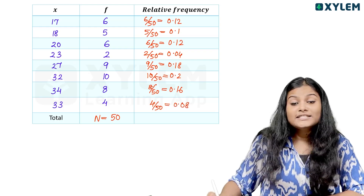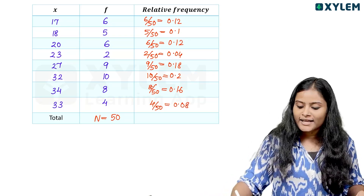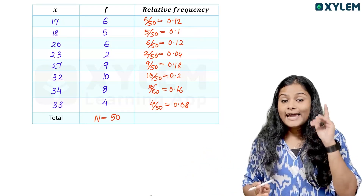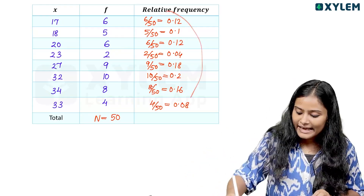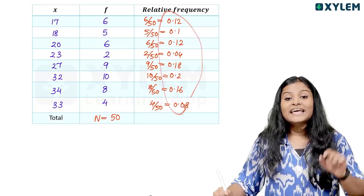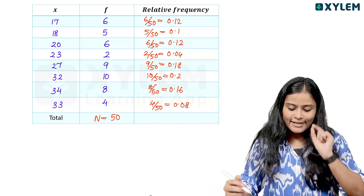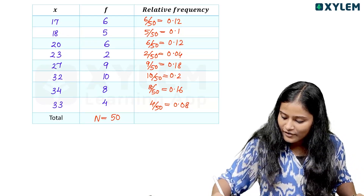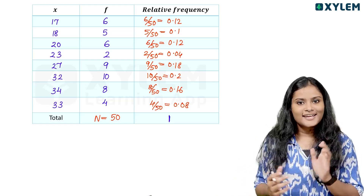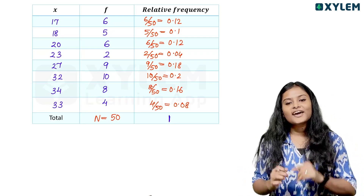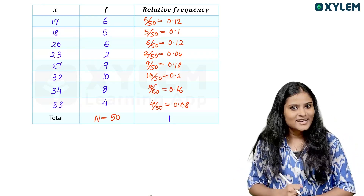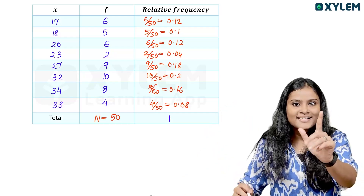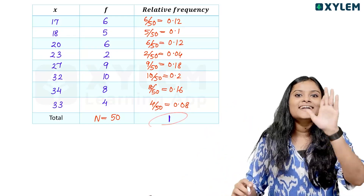The last number: 4 divided by 50 is equal to 0.08. Now, if we set the relative frequency table and add all the relative frequencies, we will get one answer. The sum of relative frequencies is equal to 1.